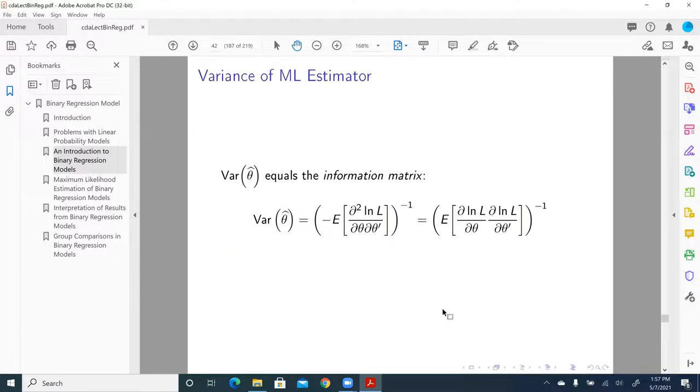In general, the variance of theta hat is equal to the information matrix. That is the negative of the expectation of the Hessian matrix. So what's in there is the Hessian matrix, it's the second derivative, and then inverse. It is negative expected second partial derivative, then inverse. Take the inverse. To be more precise, it's the inverse of the negative expected partial second derivative of the likelihood with respect to parameters.